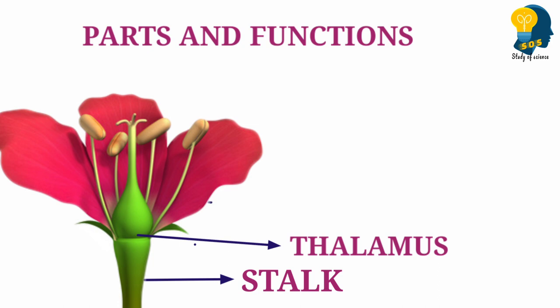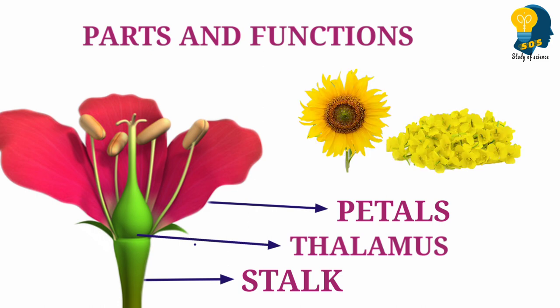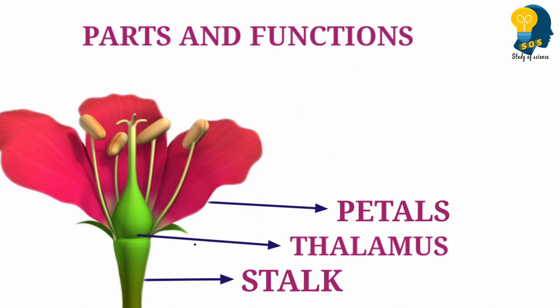Next part is the petals. Can you observe the colored region of the flower? The colored part of the flower is called as the petals. The petals are different in colors. If you look at the flowers of different plants, different plants have different flowers with different colors. So, the petals are seen in different colors. Because of the different colors, they have the capacity to attract the insects.